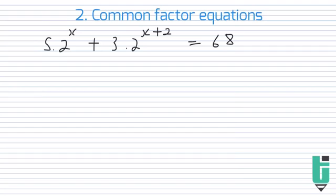So the first thing I'd actually do, if we just look at the left hand side, is just to simplify this equation. So to simplify the left hand side, we'll say 5·2^x. But what I actually want to do is break this 2^(x+2) up into 2^x times 2^2, equals 68.